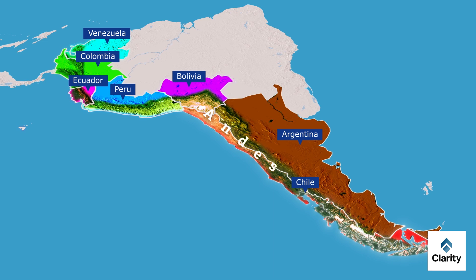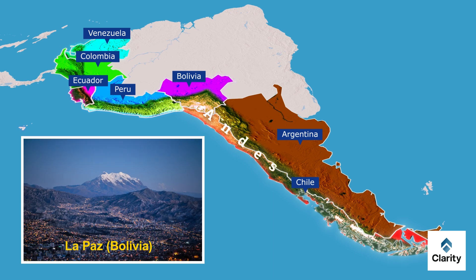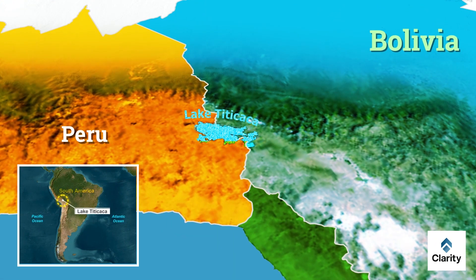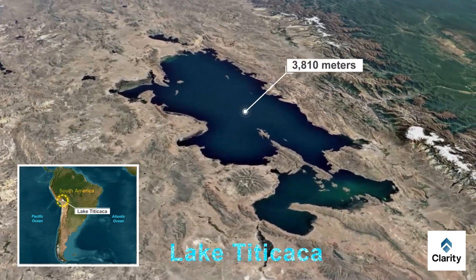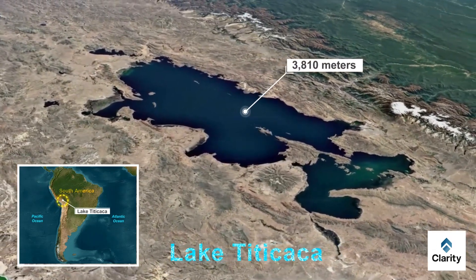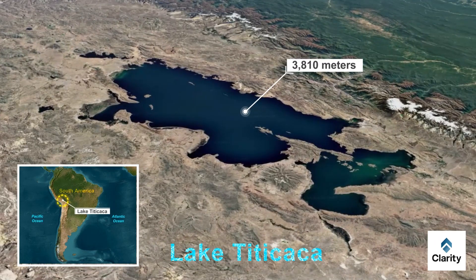The Andes have the highest capital city in the world — La Paz in Bolivia, which lies at about 3,650 meters above sea level. They also have Lake Titicaca, located between Peru and Bolivia. Lake Titicaca is the highest navigable lake in the world, at about 3,810 meters above sea level.